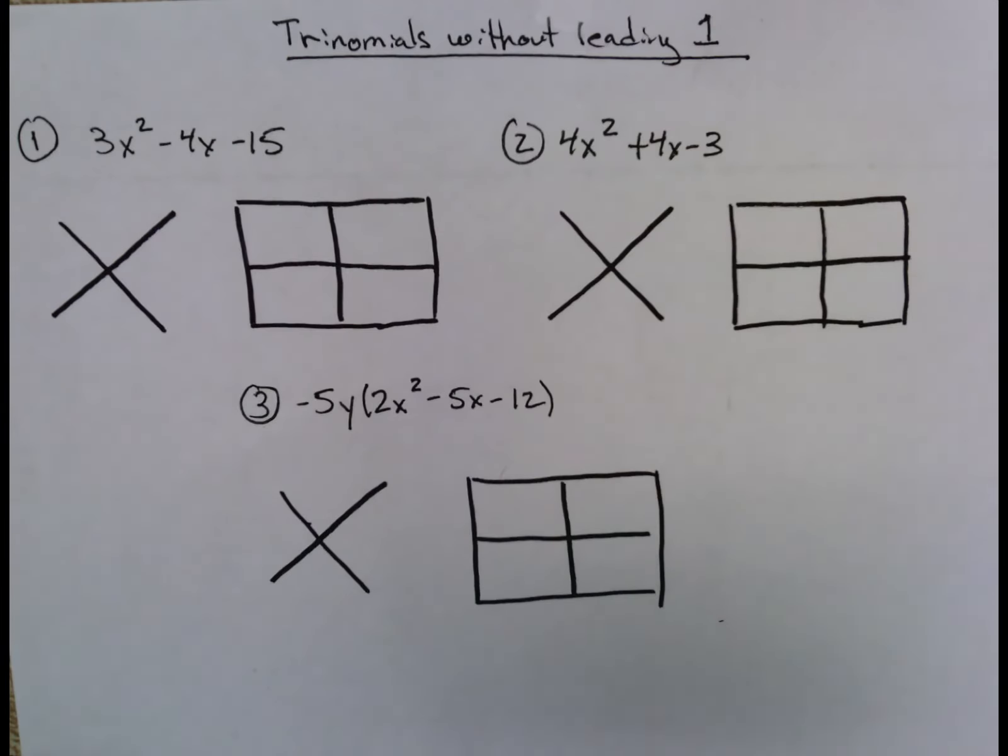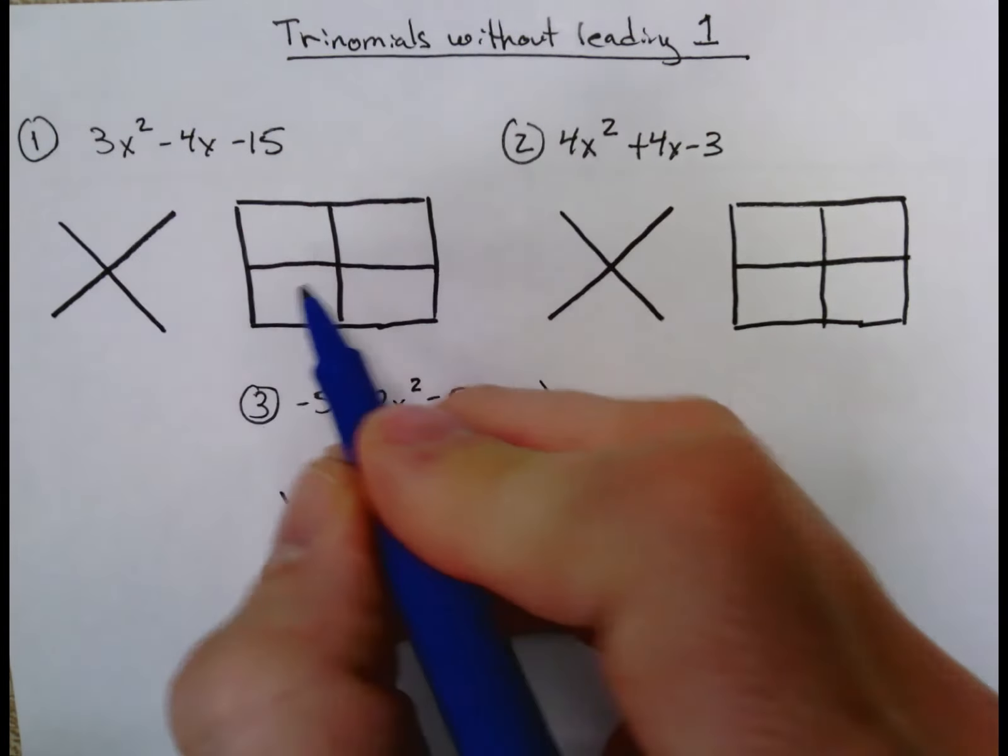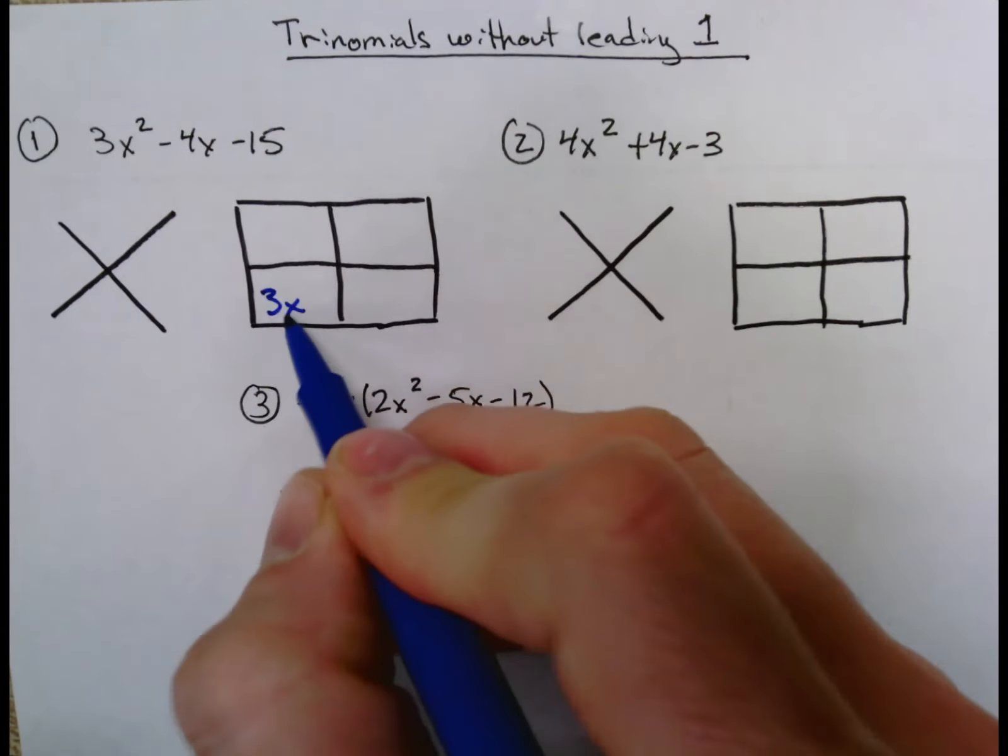So let's look at a couple examples and do a couple more together. We have 3x² - 4x - 15. 3x² goes in the bottom left, -15 in the top right, right away.